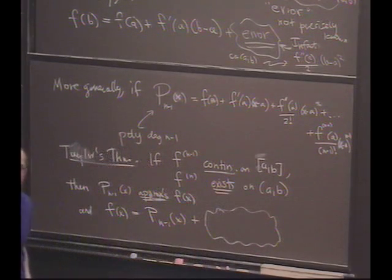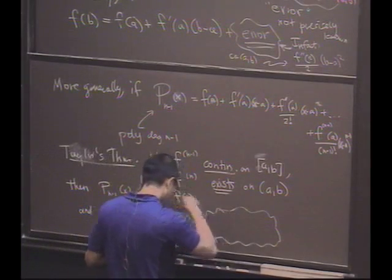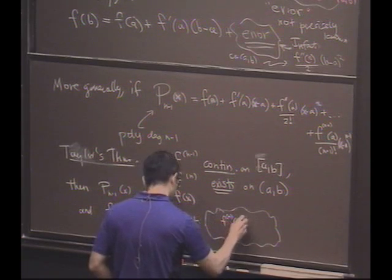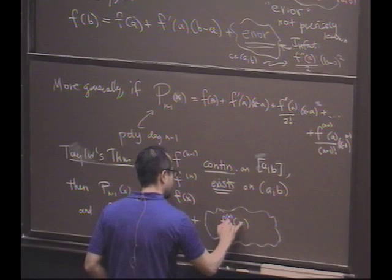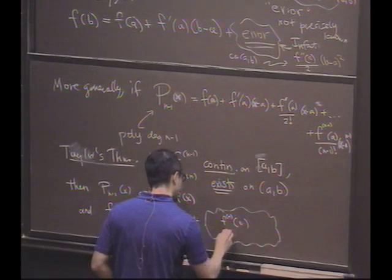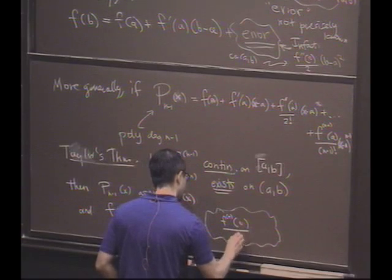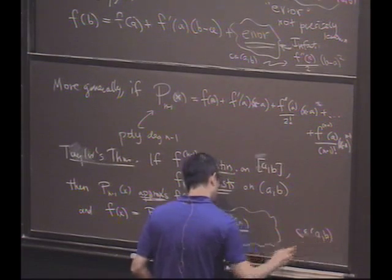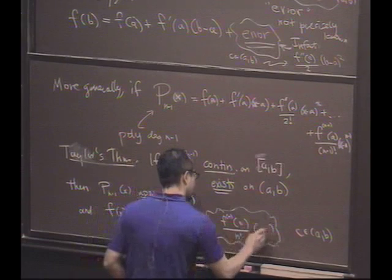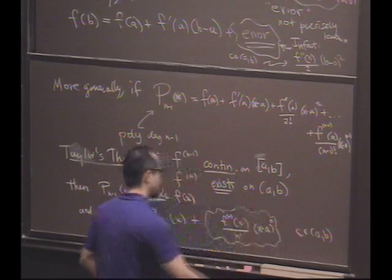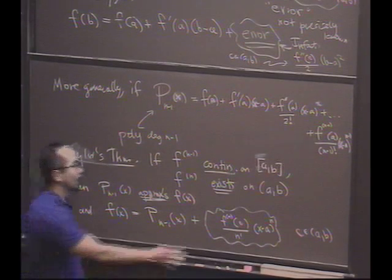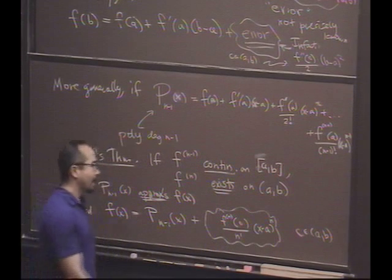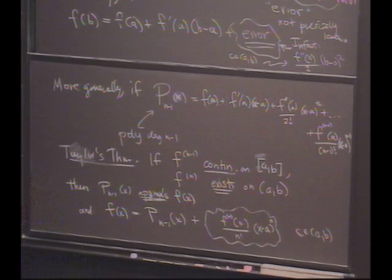What's that error term, that mysterious error term? I claim this is going to be really quite small. It'll be the n-th derivative at some mysterious point c. We have no idea where that point is exactly, but I do know that it will live between a and b. And then this gets multiplied by (x minus a) to the n-th.